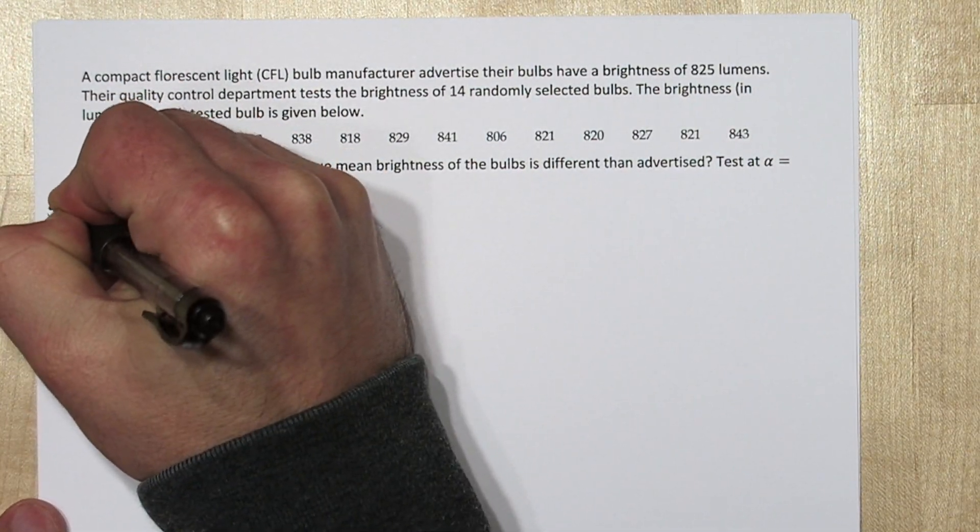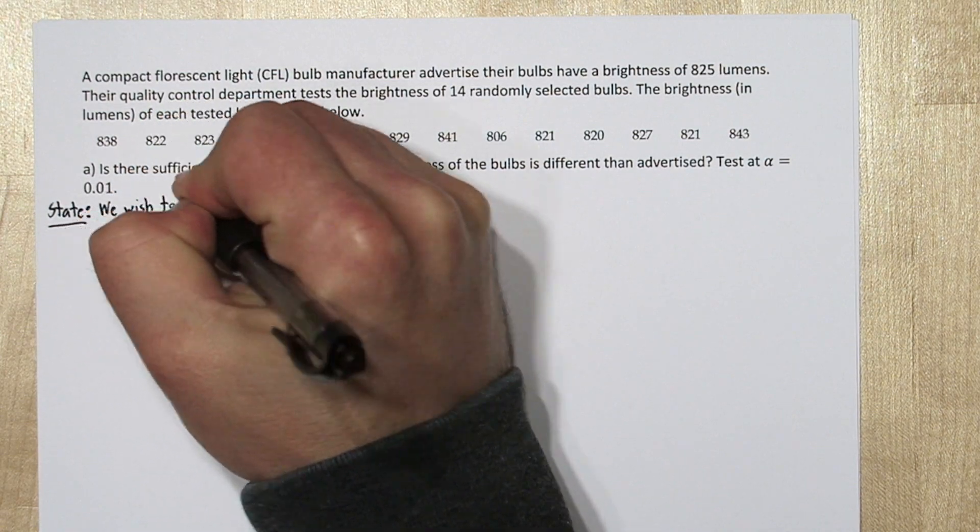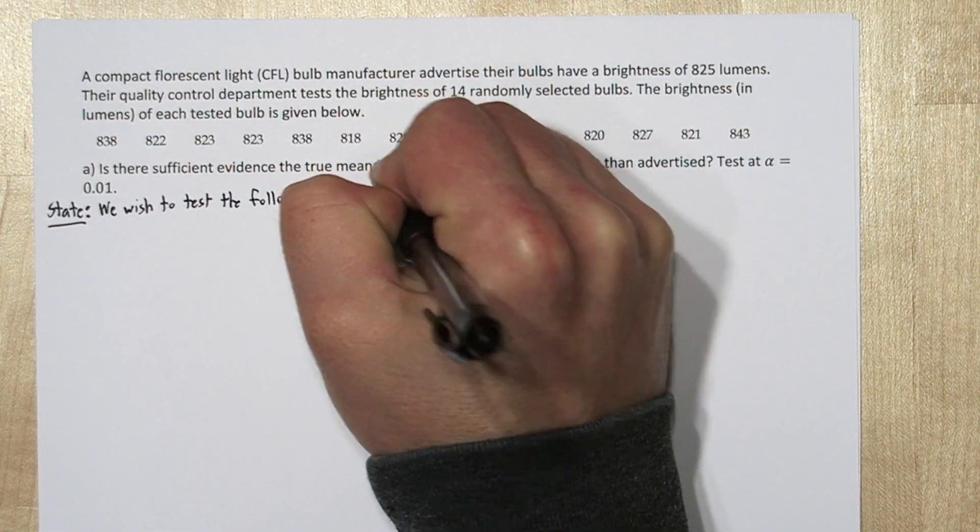Let's use the four-step solving process. So for our state step, we need our hypotheses, our significance level, and we need to define any parameters of interest.